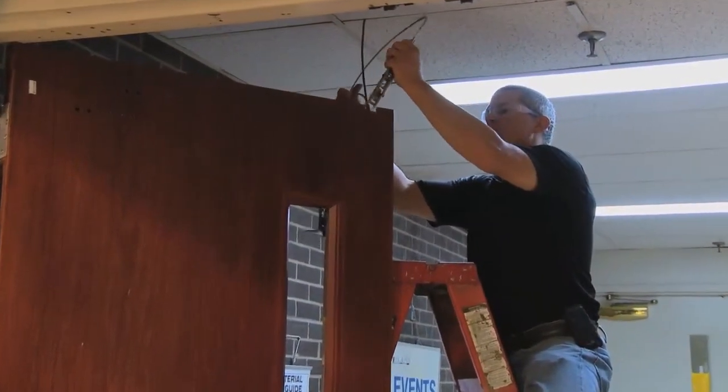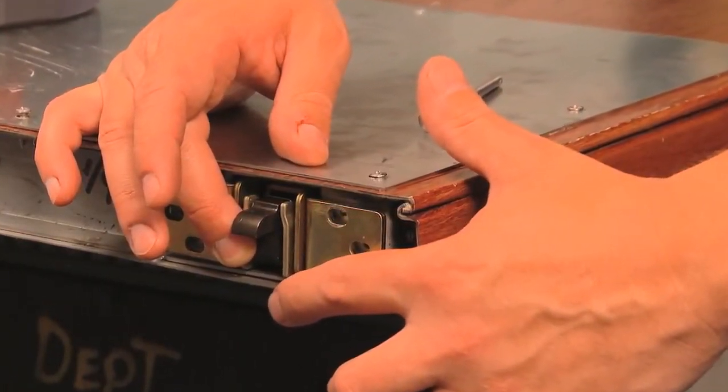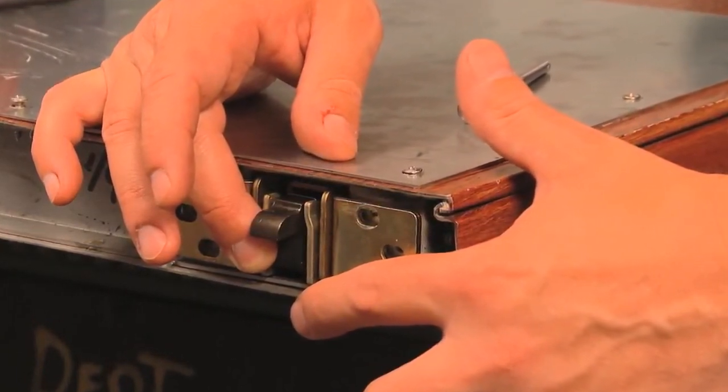In order to reinstall the cable system, you will need to properly align the bottom latch into the bottom mounting bracket. The best and easiest way to guide the latch through the door and into the bottom bracket is by using fish tape.